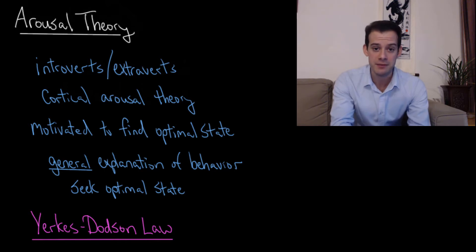We can think about some optimal state of arousal for a broad range of tasks. If our arousal is too low, then we're going to be motivated to engage in behaviors that will increase arousal. And if our arousal is too high, then we'll be motivated to engage in behaviors that will help to reduce our level of arousal.